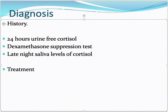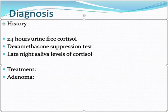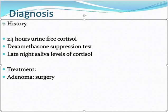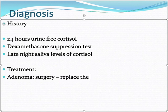The treatment of Cushing syndrome: if there is an adenoma in the adrenal glands, surgery is performed — adrenalectomy. If bilateral adenomas require removal of both adrenal glands, the patient will lack glucocorticoids and will need glucocorticoid replacement therapy with supplemental tablets.